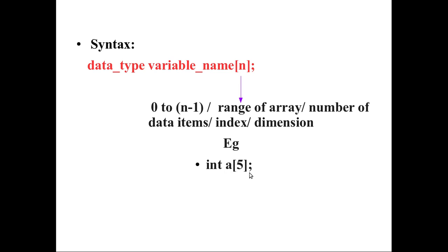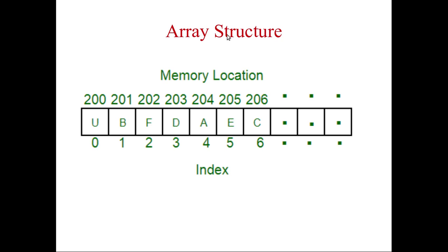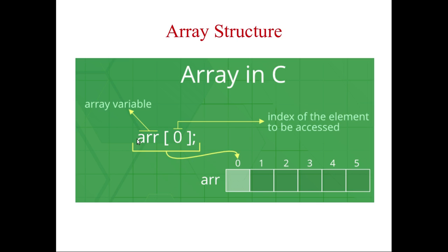For example, the data type is int, a is the array name, and 5 is the length of the array. Once you create the array, it will create memory locations like this — the data stored inside the array, and the memory location numbers 0, 1, 2, 3 represent the index used to access the values. For example, array of 0 will access the first element. Once you create an array of 6, indexes 0 to 5 are created, and accessing array of 0 retrieves the value from the first position.